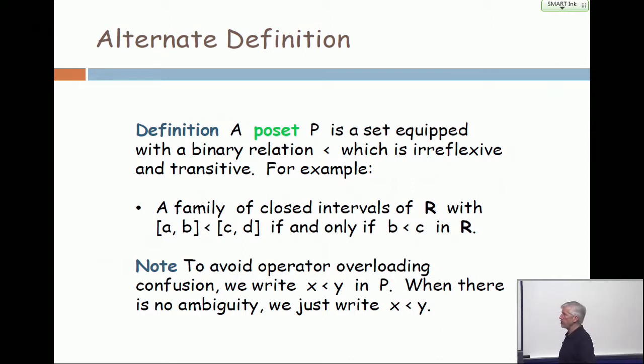And here's an example where the definition goes much easier when you use less than rather than less equal. Any family of closed intervals of the real line can be partially ordered by making up this definition: [a,b] is less than [c,d] if and only if b is less than c in R.